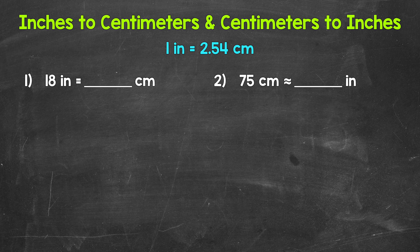To start, there are 2.54 centimeters in an inch. In other words, 1 inch equals 2.54 centimeters. Let's jump into a couple of conversions here, where we will go from inches to centimeters and centimeters to inches.